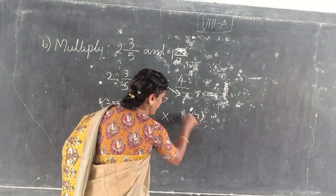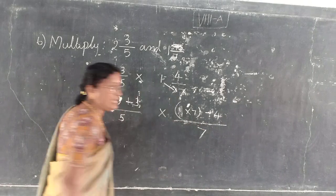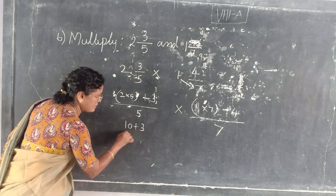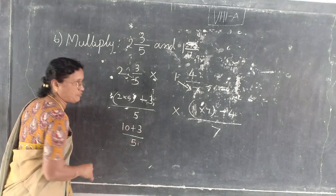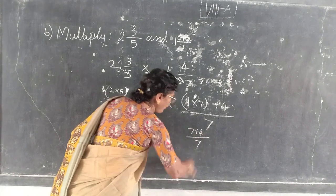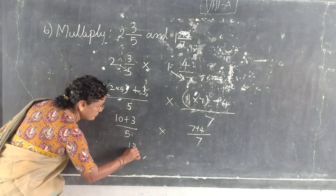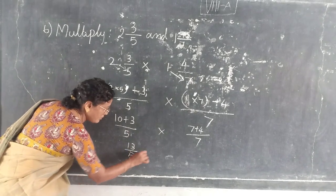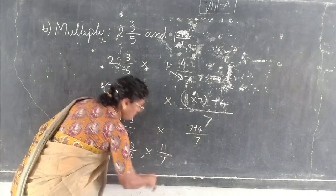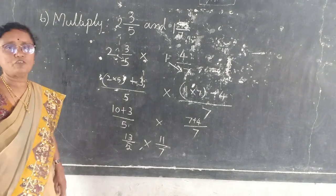Next one is what? 1 into 7 plus 4 divided by 7. So 1, 7 is 7. 7 plus 4 divided by 7. 10 plus 3 is 13. 7 plus 4 is 11. Do you follow or not?